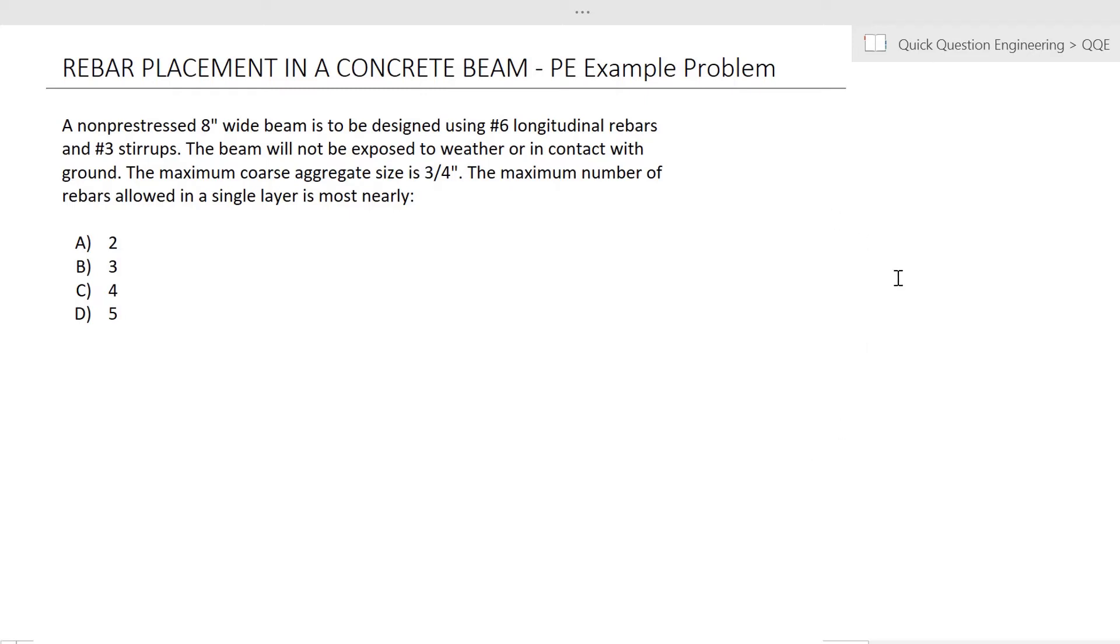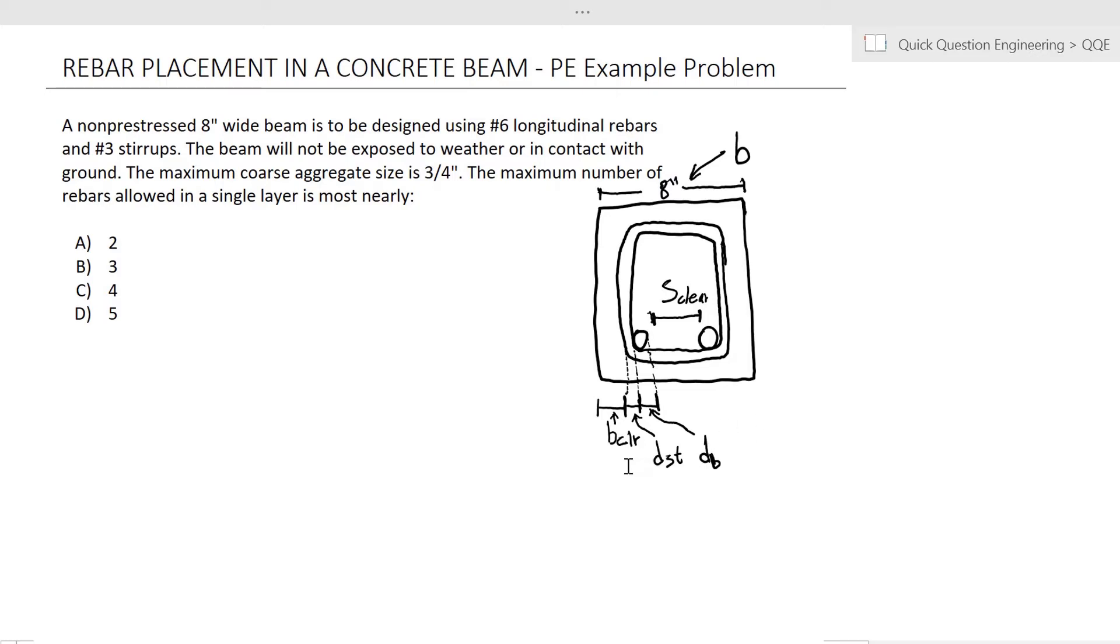So let's draw our beam here. The only information we have is first the beam width, which is 8 inches, and then we have to find out what the clear cover is, and then also the diameter of these stirrups and the diameter of the longitudinal rebar.